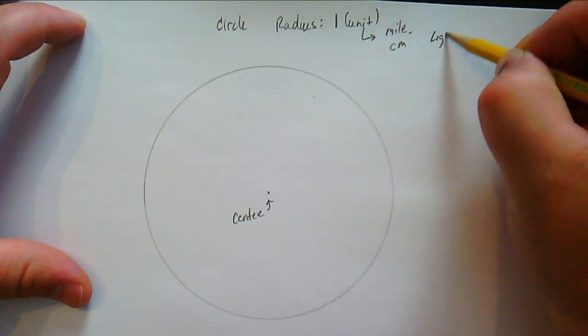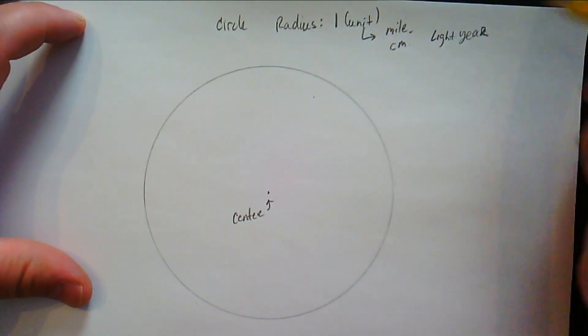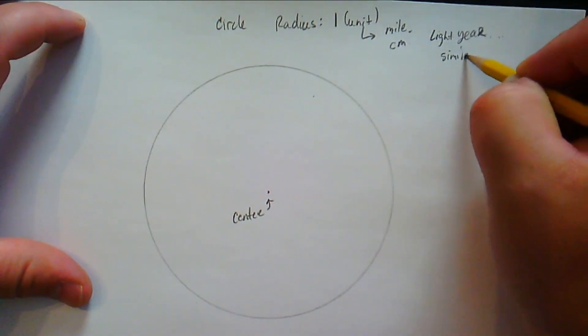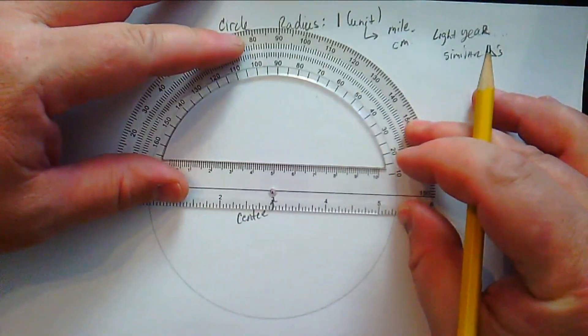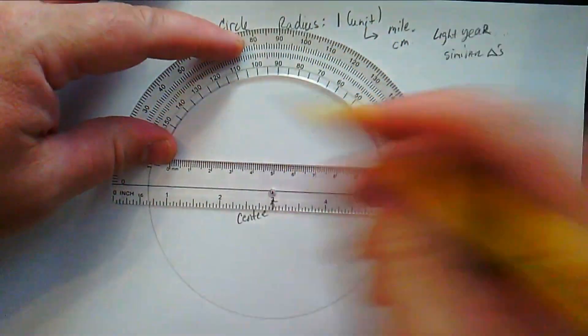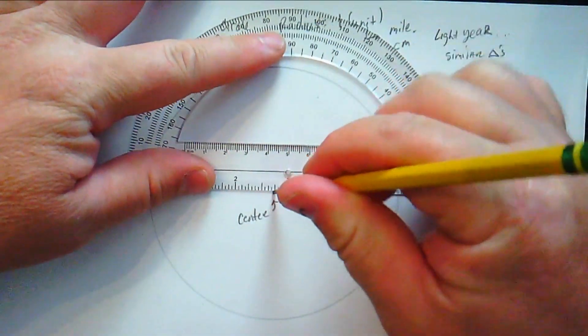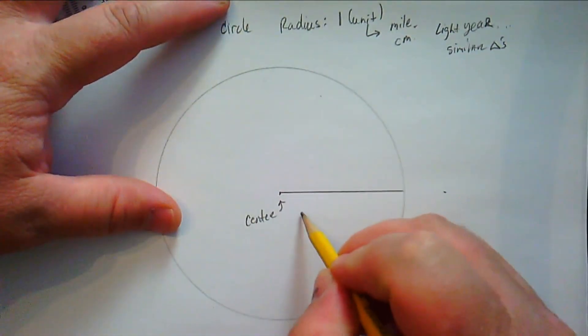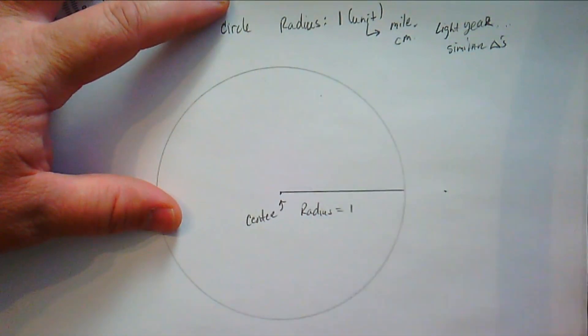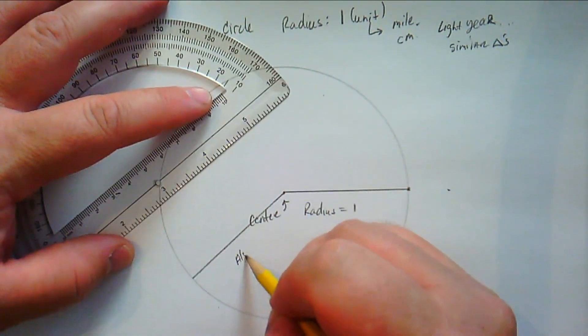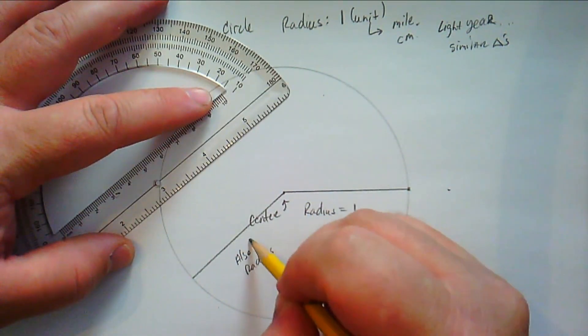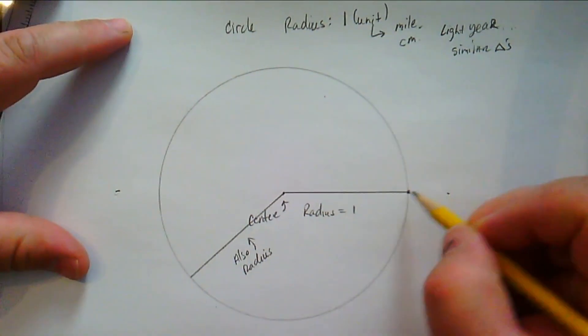It doesn't even matter because, well, when you start dealing with triangles, if the angles are all the same, then they're similar and the sides are proportional, right? So you could say that this radius is a mile. You could say it's a centimeter. You could say it's a light year. It doesn't even matter, right? So let's go ahead and draw our radius. Now, our radius is just one, right? So that means from the center to anywhere on the edge of the circle, the radius is just one anywhere, whether it's drawn, labeled, or not.